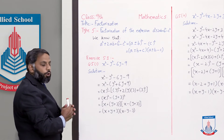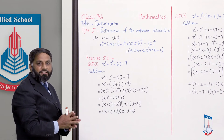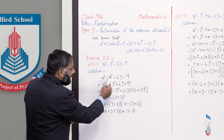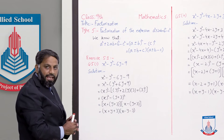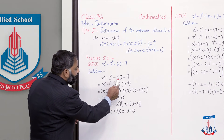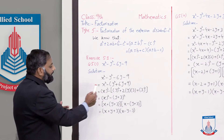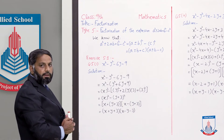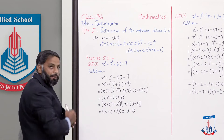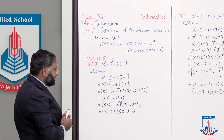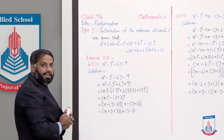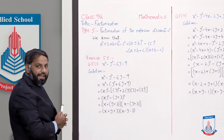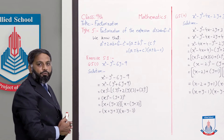Hame dekhna hai ki kaunsi three terms milke ek perfect square banengi. Is liye is x² ko aise likhenge. Last three terms mein se minus common lenge — woh minus common lene se in tamam terms ke sign change ho jaayenge. Ab yah y² positive ho gaya, 6y bhi positive ho gaya aur 9 bhi positive ho gaya. Next step mein jo first term hai woh x ka whole square ban jaayegi aur jo last expression likha hai iska hum square complete karenge.